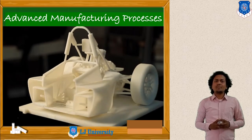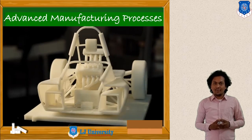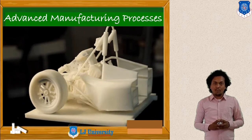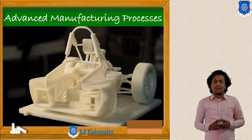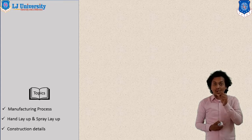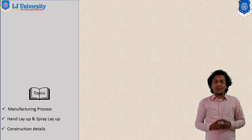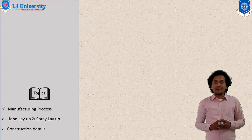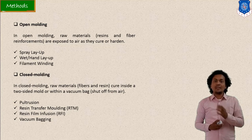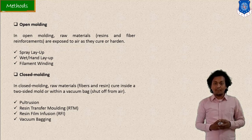There are many types of matrix materials and reinforcement materials available. We have discussed the classification of composite materials. In today's session, we are going to discuss various manufacturing processes — how we can make a composite material. Matrix and reinforcement are the two most important components in any manufacturing method.